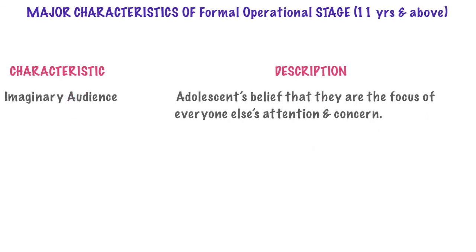Adolescents experience formal operational egocentrism, which expresses itself in another major characteristic of this stage: the imaginary audience. This is the belief in adolescents that they are the focus of everyone else's attention and concern. Adolescents tend to imagine themselves as always on stage, which makes them extremely self-conscious. This is why we find adolescents spending a lot of time in front of the mirror, grooming themselves and trying to look as perfect as possible.